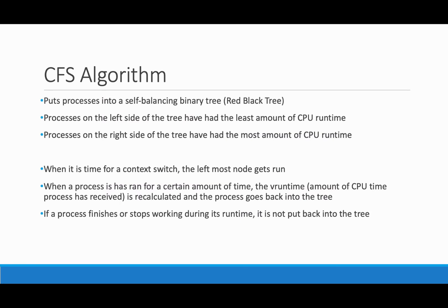The algorithm uses a self-balancing binary tree. Processes on the left side of the tree need the CPU the most, so they have had the least amount of CPU time. Processes on the right side need the CPU the least, so they've had the most amount of CPU time. When it's time for a context switch, the algorithm chooses the leftmost node to run, and once it's run, it puts it back into the tree with a recalculated amount of CPU time it has received.